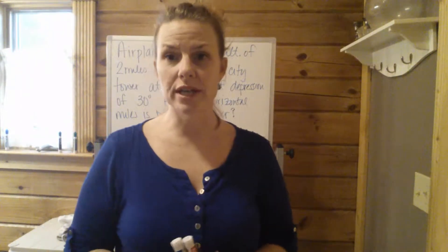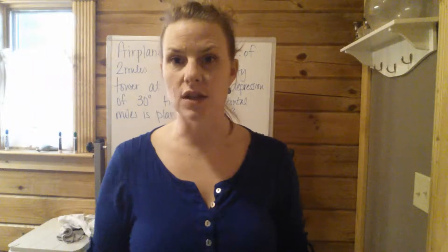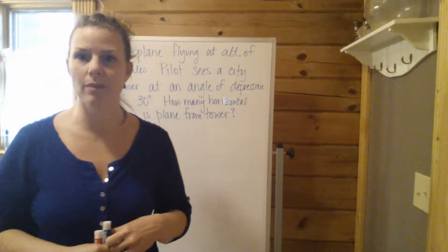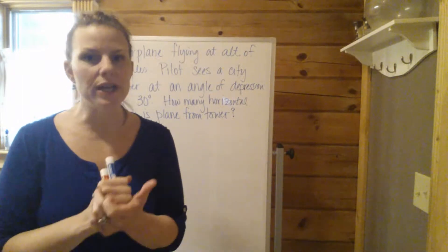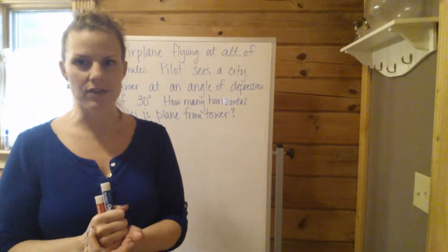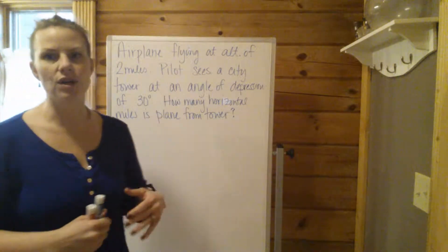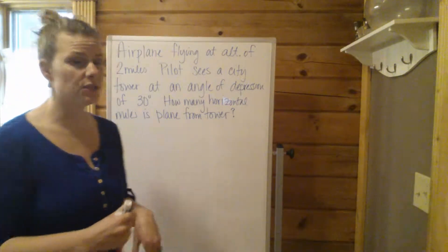Hi, we're going to do another trig story problem involving sine, cosine, and tangent where you have to decode the words of the story problem, set up the appropriate right triangle, that's always half the battle. Once you have that diagram drawn, then you're going to solve whatever they're asking for. So let's read through the problem.